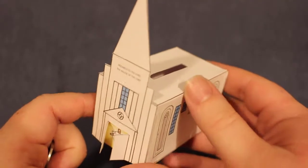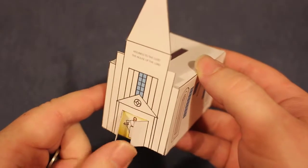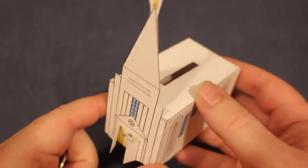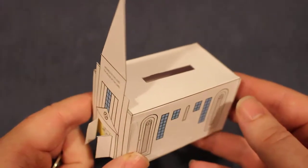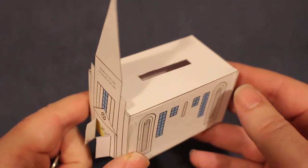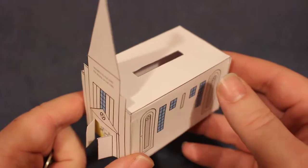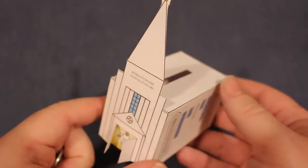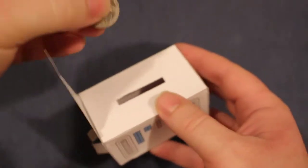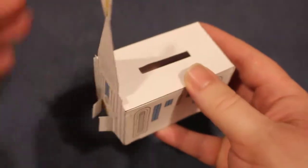So when you're done you'll see that you can actually open the front doors to reveal the savior. And the children can use this to store tithing or they can save for their mission or save for a temple trip. They can use it as a piggy bank. So they can take their pennies, the coins, drop them in.